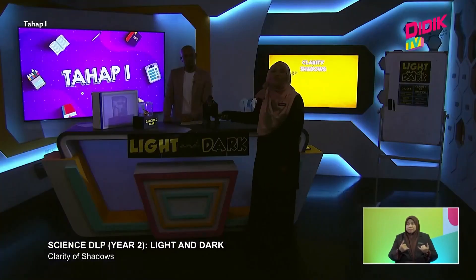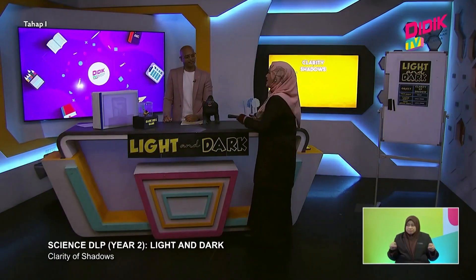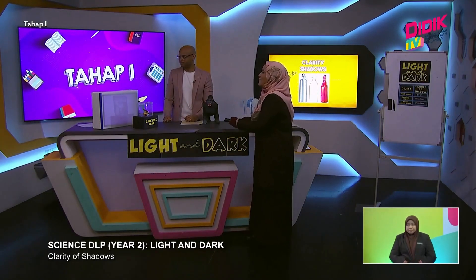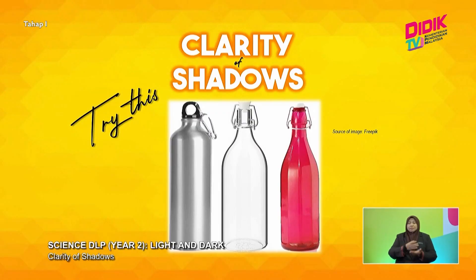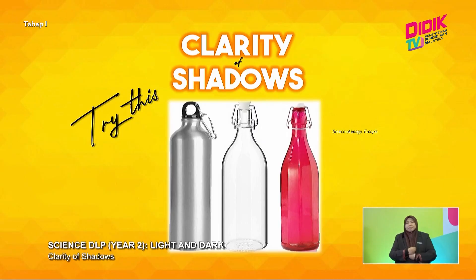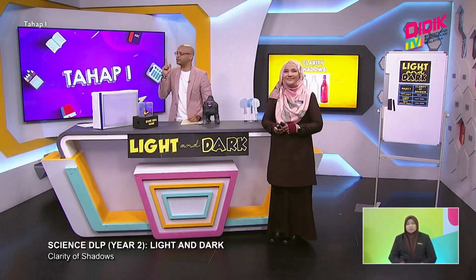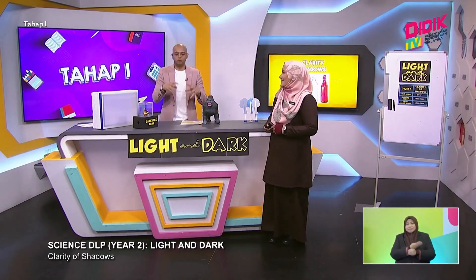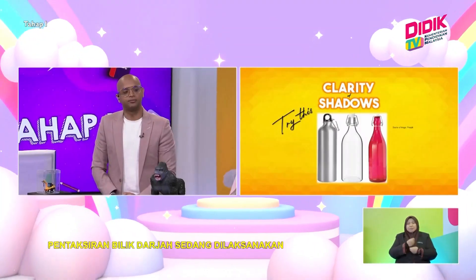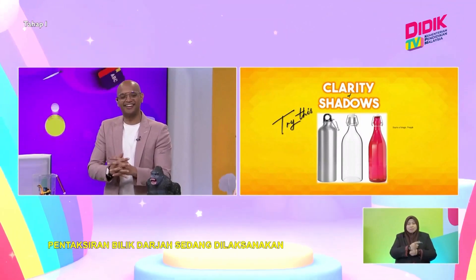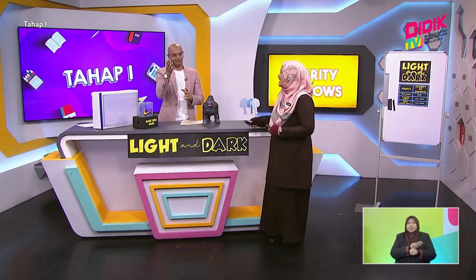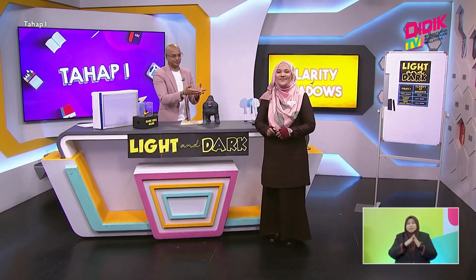Now I have a question for you. Look at the screen right now — we have three types of bottles: metal, glass, and also a coloured one. Which one of these bottles will cast a very clear shadow? Can anyone at home try? What do you think the answer is? I think it's the metal bottle that will cast the most clear shadow. Yes, you are right, Sean — the metal bottle. Hopefully everyone at home got the right answer too, and right now we're going to take a short break — back after this on D-Day TV KPM.